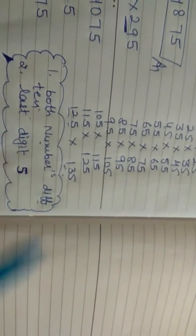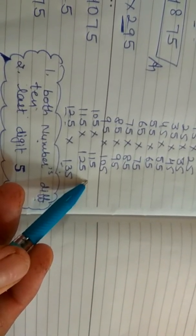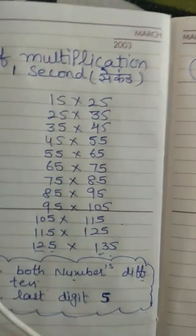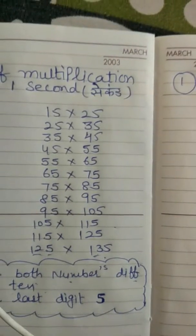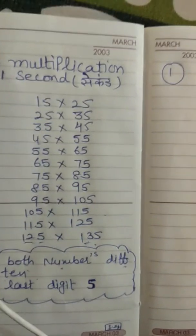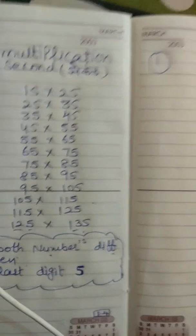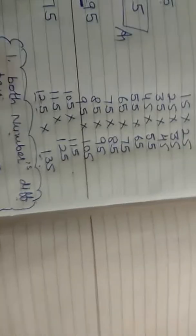You can apply this trick when you see this pattern. The numbers should be like 15 multiply by 25, 25 multiply by 35, 35 multiply by 45, 45 by 55, 55 by 65. The difference between them is 10, and the last digit is 5. Just remember this in your mind, then you can apply this.